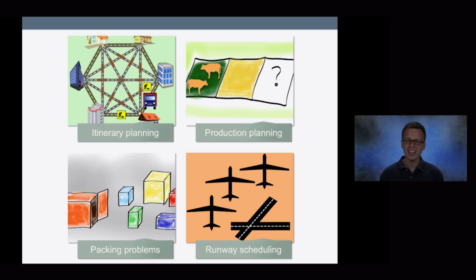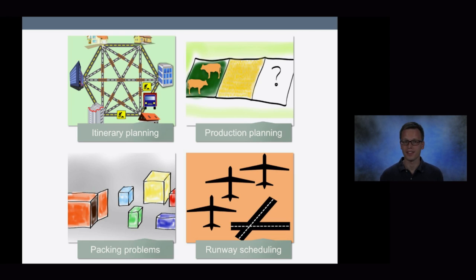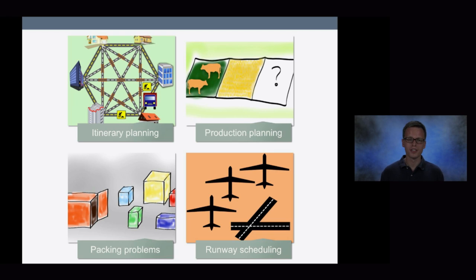All the problems I look at have two very specific properties. First, the answers have to be integer numbers. So in the itinerary planning problem, that means you can either go to one location or another location within one step, but you can never go to half one location and half the other at the same time. And second, there's a cost associated to a solution. In the itinerary planning problem, the cost of an itinerary is the time it takes to complete it — the travel time for all the roads that are part of that itinerary. For the rest of the video, I will focus on this itinerary planning problem.